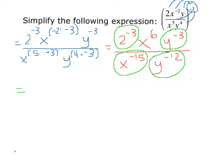As we move through the numerator, we have 2 to the negative 3, so we want to take the reciprocal of that, meaning it moves from the numerator down to the denominator and the exponent becomes positive. Now we have our x to the 6th term, and since x to the 6th does not have a negative exponent, it can stay in the numerator. And then our y to the negative 3rd term — we take the reciprocal of that, so it moves to the denominator and the exponent becomes positive.